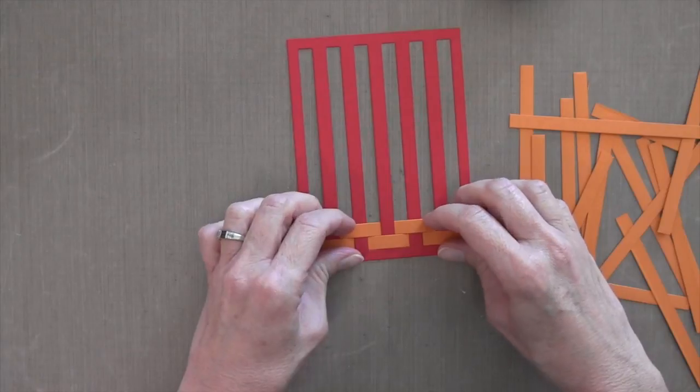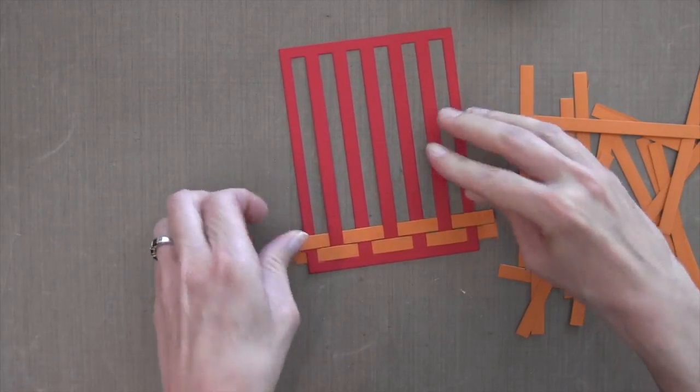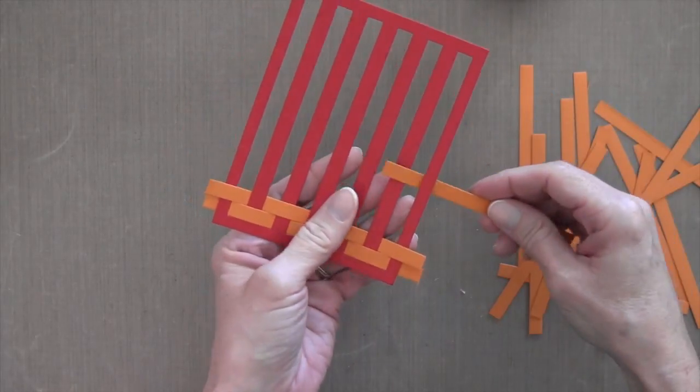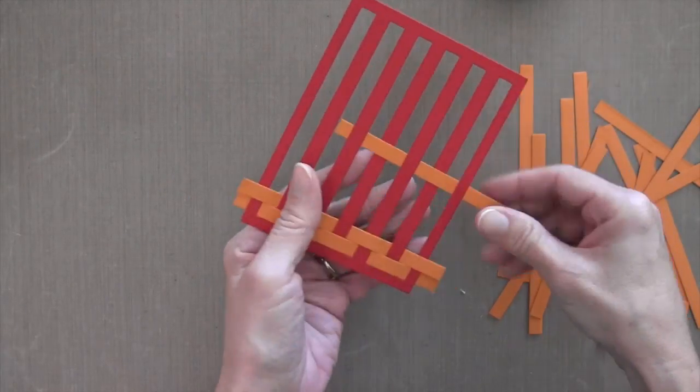And then push it down. And this kind of reminded me of all those pot holders I used to make when I was a kid on that pot holder loom. Now all these pieces are going to hang off the edge which is great because then we'll glue them down and then cut off the excess.